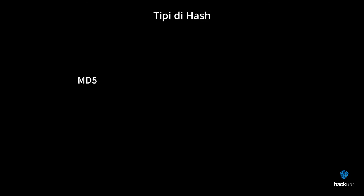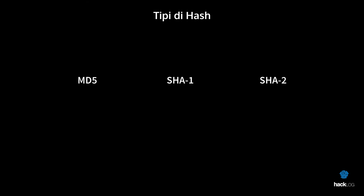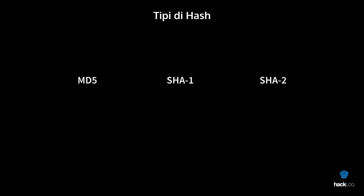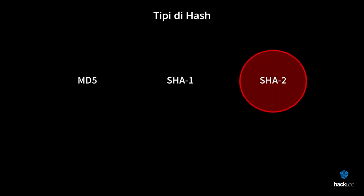In the information field, it is possible to find three main types of hash: MD5, SHA-1, and SHA-2 (256 or 512 bit). Each of them has its own peculiarities, with relative advantages and disadvantages. We will limit ourselves to saying that the most secure ones today are SHA-256 or SHA-512.